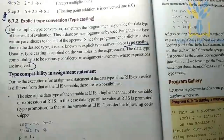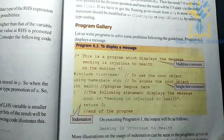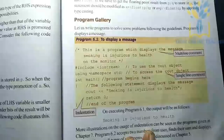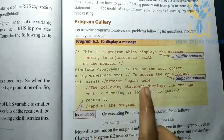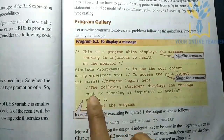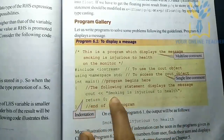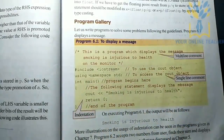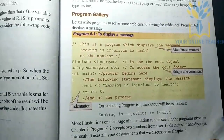This is explicit type conversion — type casting. Here is a simple C++ program. We have the message: 'Smoking is injurious to health.' The code includes: hash include iostream, using namespace std, int main, open braces, and the cout output statement. This is the complete code. Please like this video. Thank you.